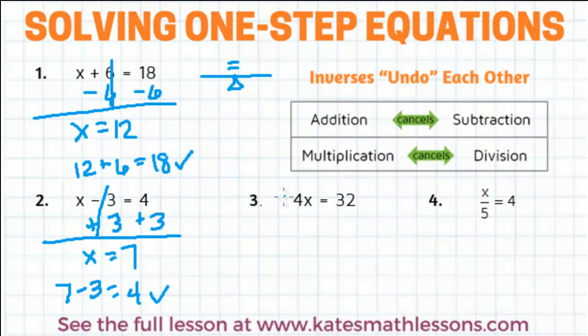In this next one, we have a 4 right next to an x. Anytime you see a number right next to a variable, that means they're being multiplied. So in this problem, we have 4 times some number has to come out to 32. You probably already know the answer, but let's practice using the steps.